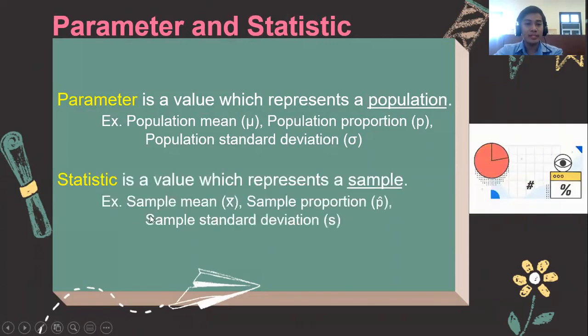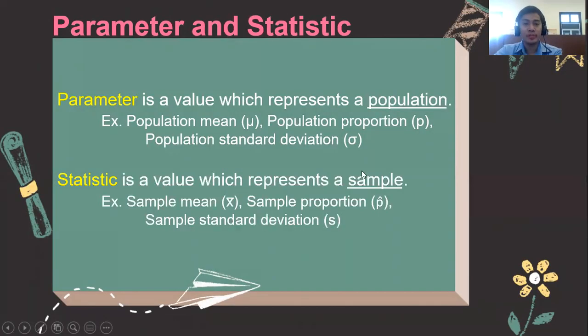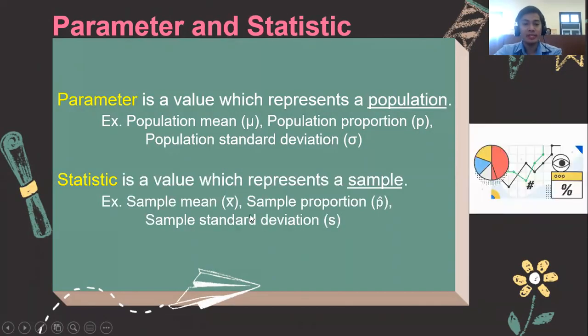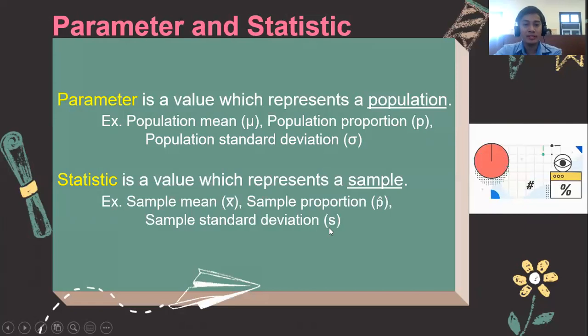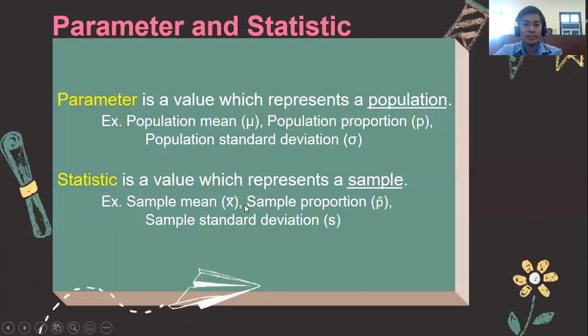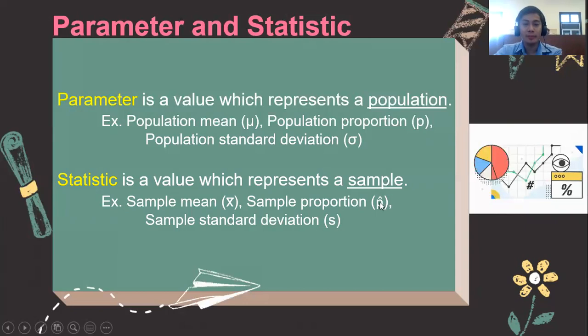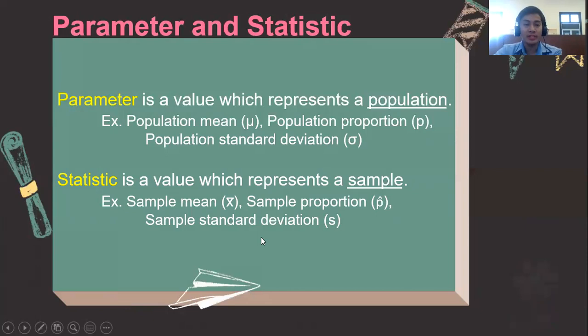While a statistic is a value which represents a sample. Examples are x̄ (x bar), p̂ (p hat), or s. x̄ means sample mean, p̂ is the sample proportion, and s is the sample standard deviation.